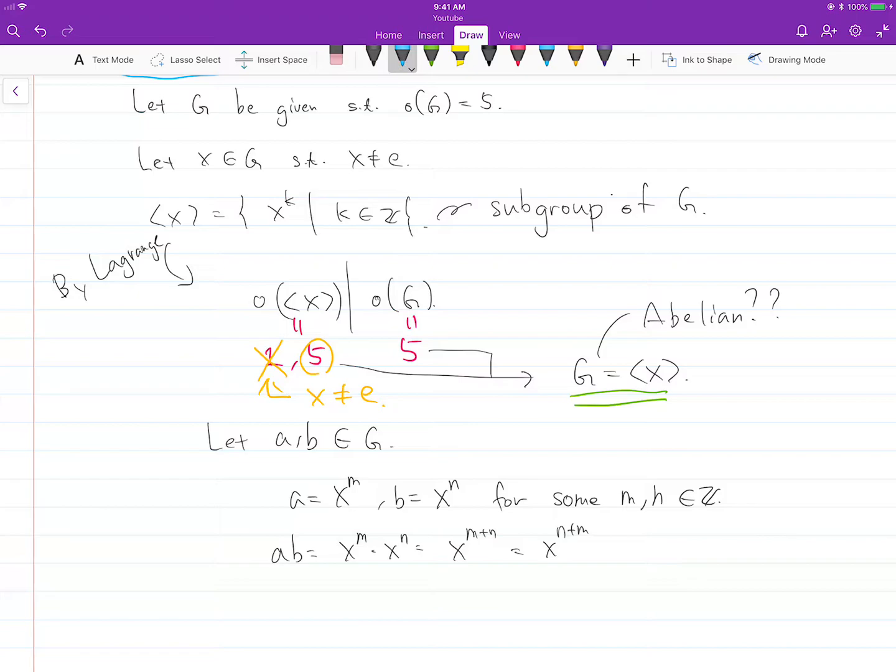And X to the N plus M—these are obviously equal. So with this argument, we proved that every element in G commutes, so G is abelian.